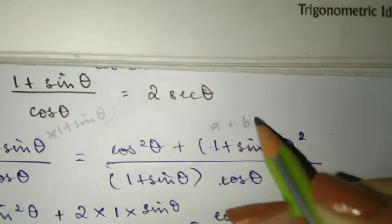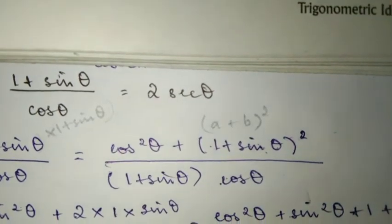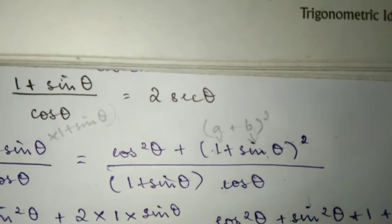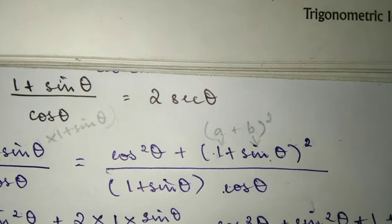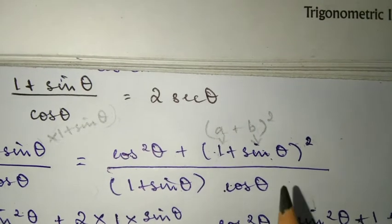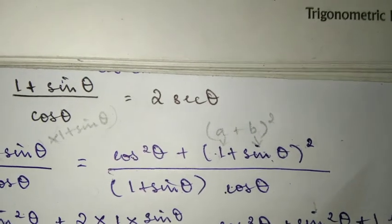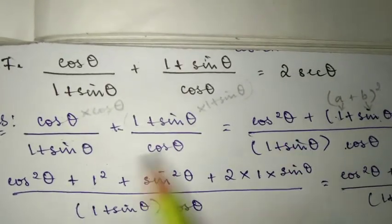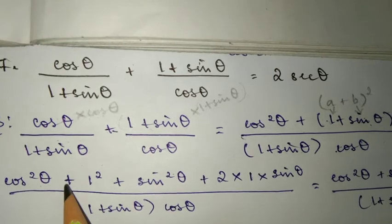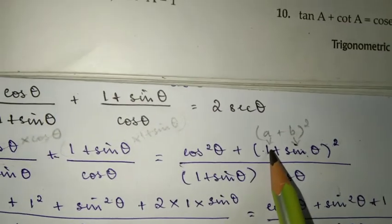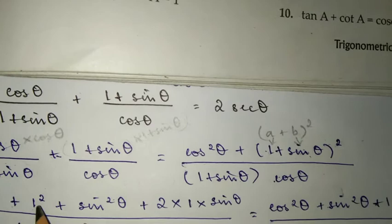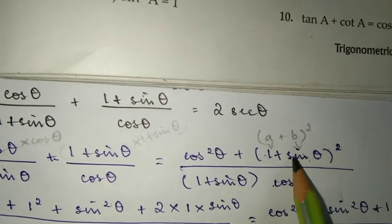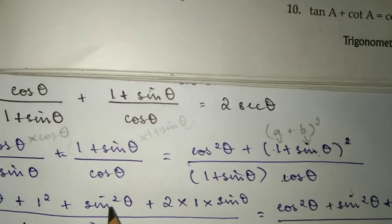Now this 1 plus sin theta whole squared follows the a plus b whole square formula from algebraic identities, so we expand it. In this case, 1 is a and sin theta is b. Let's recap what we studied last year: a plus b whole square equals a squared plus b squared plus 2ab.